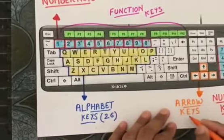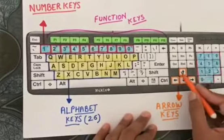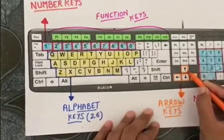There are four arrow keys. Up arrow key, down arrow key, left arrow key and right arrow key.